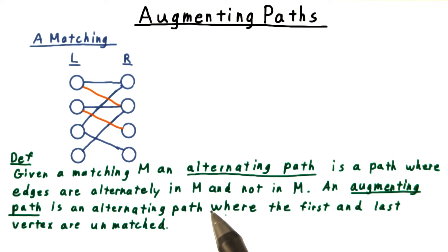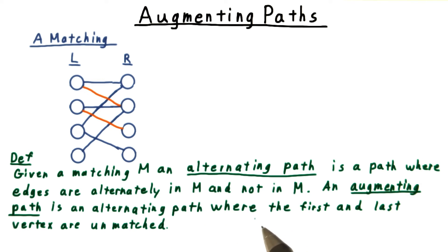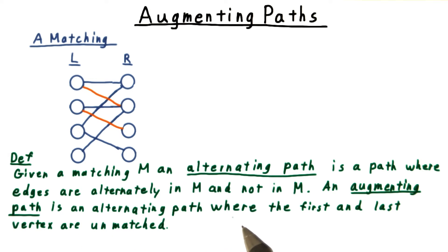We start by defining the more general concept of an alternating path. Given a matching M, an alternating path is a path where edges are alternately in M and not in M. And an augmenting path is an alternating path where the first and the last vertex are unmatched.